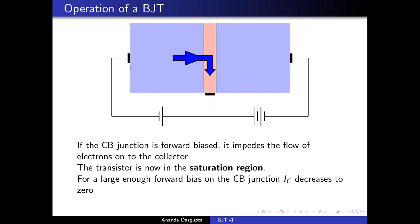Now that we have some idea about how a bipolar junction transistor works, let us move to a slightly more realistic model. This will give us mathematical equations to understand its various modes of action. The model I am going to talk about next is a bit more complicated but also more precise. For many practical purposes what we have discussed so far suffices, but let us now move on to describing what is called the Ebers-Moll model for a bipolar junction transistor. For variety, let us begin with a PNP transistor.